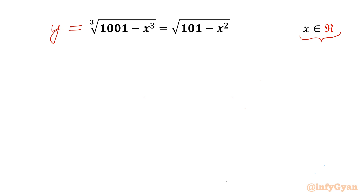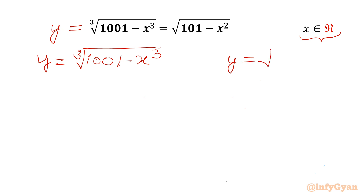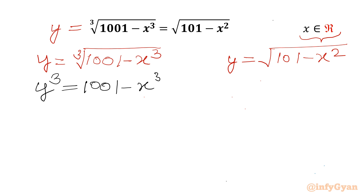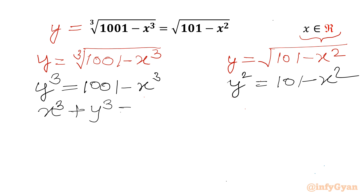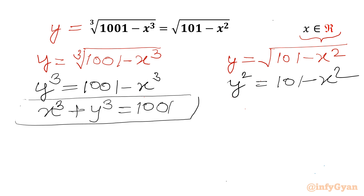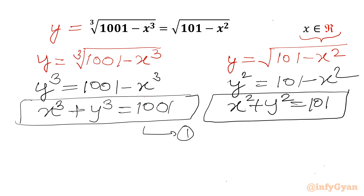I will write the equation equal to y. So I can write y equal to cube root of 1001 minus x cube, and y equal to square root of 101 minus x square. Now I will consider cubing of the first equation and squaring of the second equation. So y cube equals 1001 minus x cube, and y square equals 101 minus x square. After rearrangement, y cube plus x cube equals 1001 — equation 1 — and x square plus y square equals 101 — equation 2.